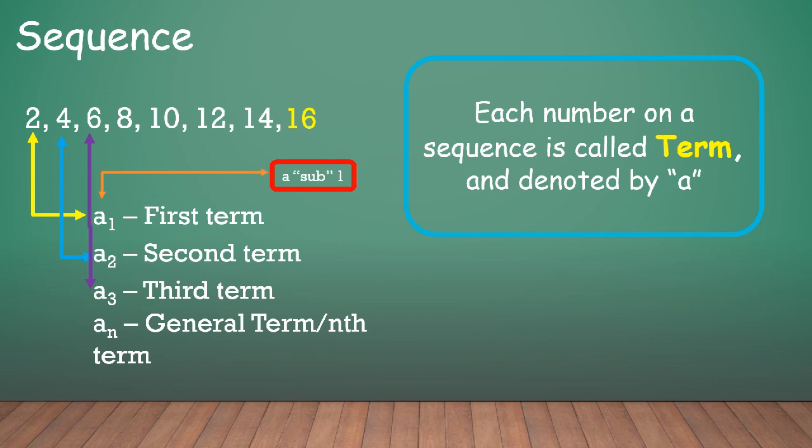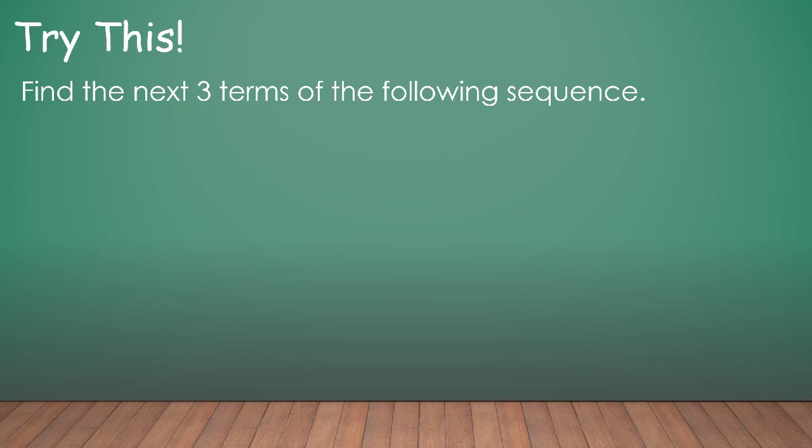So since we already know that if a number follow a pattern, it is called a sequence. If we know the pattern of that sequence, we can easily find the terms of your sequence. So let's try this one. Find the next 3 terms of the following sequence. 2, 5, 8, 11, 14, 17. So what will be the next 3 terms? So we will have 20, 23, and 26 because the rule or the pattern here is adding 3.